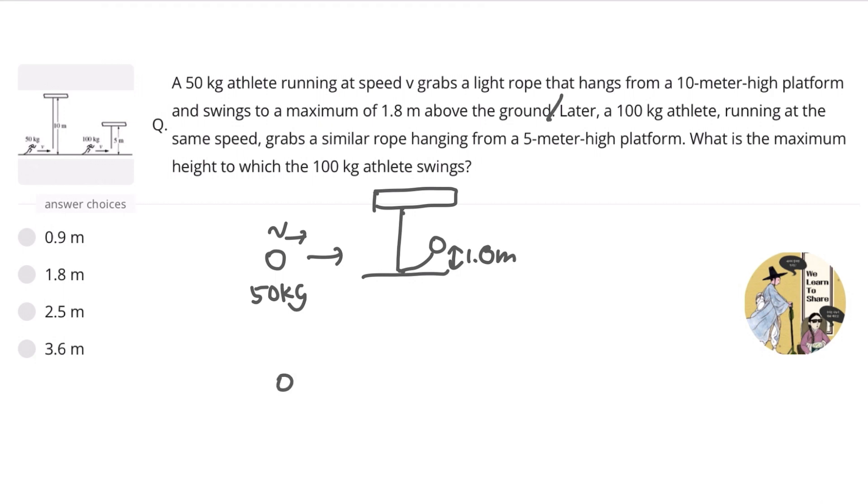And then later, a 100 kilogram athlete running at the same speed grabs a similar rope hanging from a 5-meter-high platform. What is the maximum height to which the 100 kilogram athlete swings from the ground?